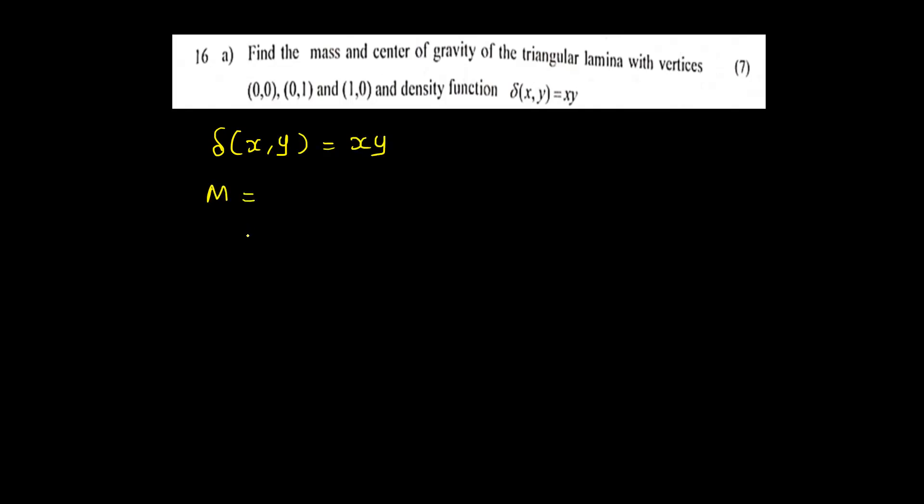Find the mass and center of gravity of the triangular lamina with vertices at (0,0), (0,1), and (1,0). The density function ρ(x,y) is equal to xy. Mass is equal to the integral of ρ(x,y) dA, which is the integral of the density per unit area.